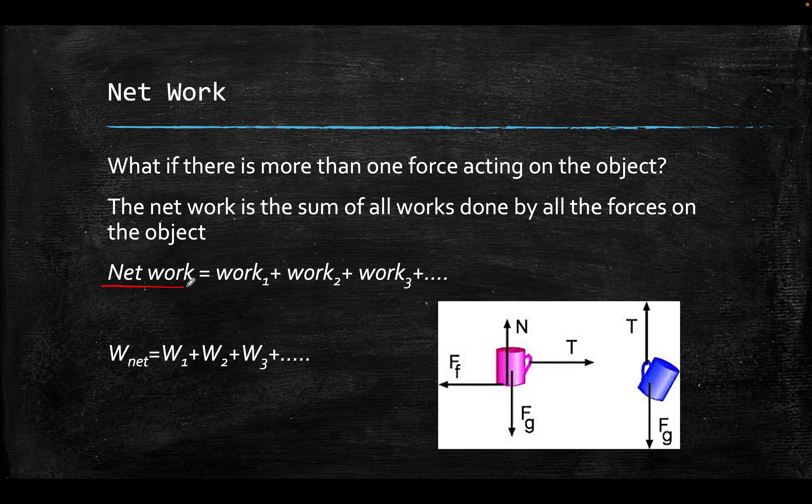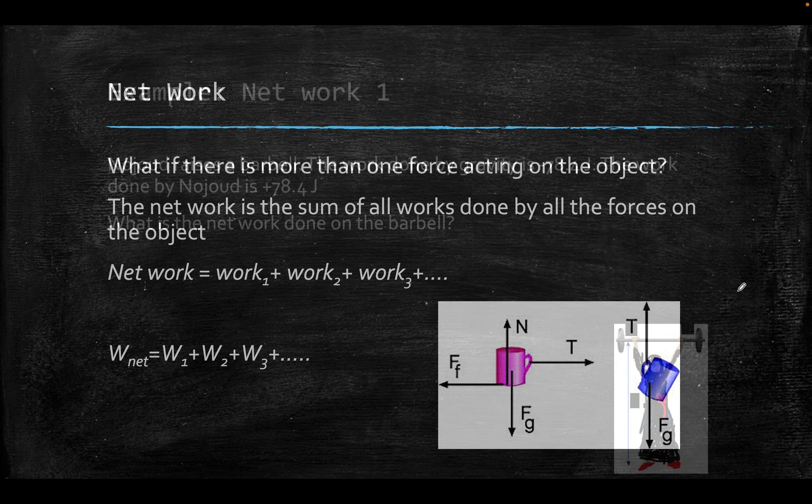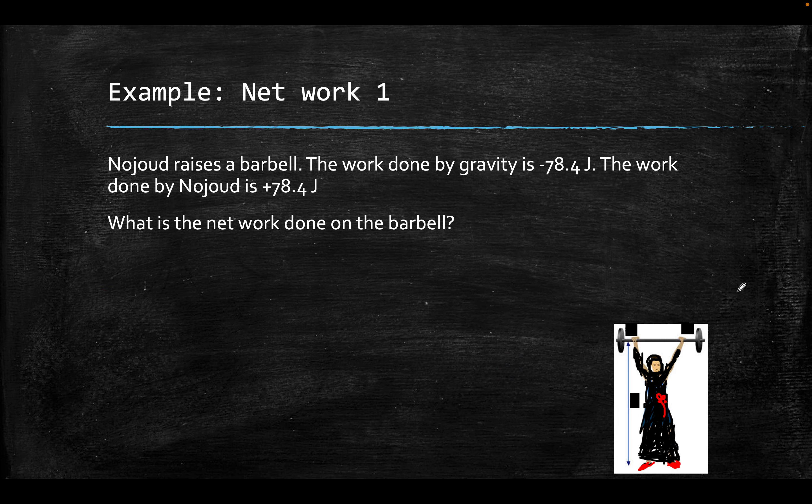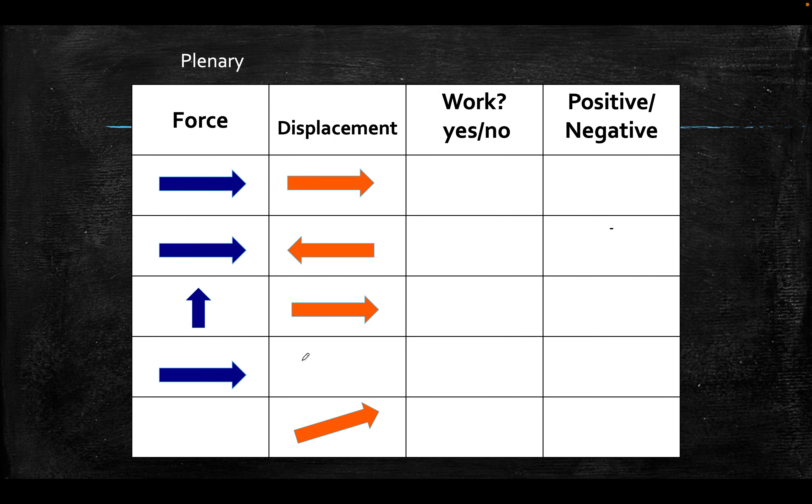So then you can go ahead and see the net work done would be 0. Because to get the net, the total work, you add all the works in all the different directions. You add them all up. In this case, we only have 2 up and down. We will subtract them in this case. Why? Because they are in the opposite direction. It takes us back to adding vectors. So like we said, gravity was minus 78. The work done was plus 78. The net work overall will end up being 0. Adding, subtracting will all become 0.